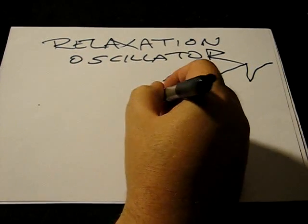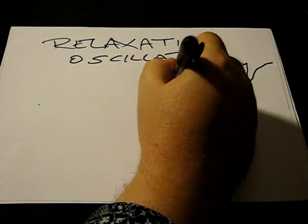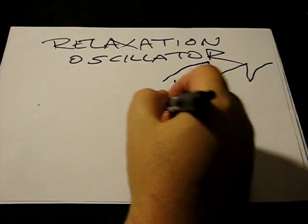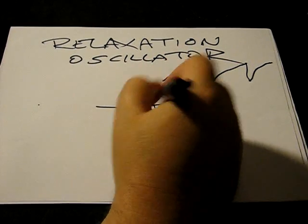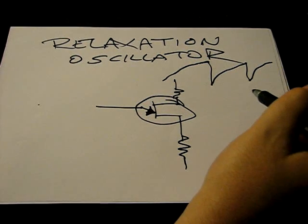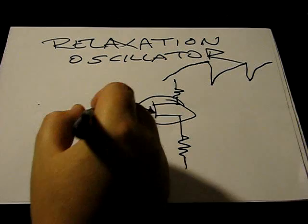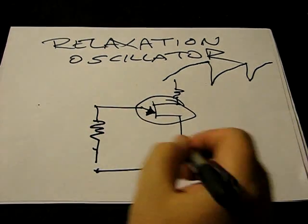A unijunction transistor looks like a FET schematically, sort of, except the base or gate or whatever you want to call it is drawn a little bit differently. And it has an odd property called negative resistance.